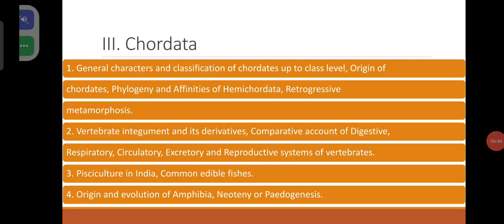Coming to the third chapter that includes Chordata. General characters and classification of chordates up to class level. Origin of chordates, phylogeny and affinities of Hemichordata. Retrogressive metamorphosis. Vertebrate integument and its derivatives. Comparative account of digestive, respiratory, circulatory, excretory and reproductive systems of vertebrates — we have to take each system and correlate the similarities and differences starting from fishes up to mammals.